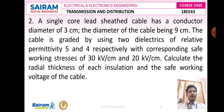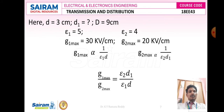The given data: small d, the conductor diameter, is 3 cm. Capital D, the diameter of the cable, is 9 cm. We do not know d1. It is a two insulating material cable, so there is no d2. Epsilon 1 equals 5, epsilon 2 equals 4. The first electrical stress is 30 kV per cm and the second is 20 kV per cm.